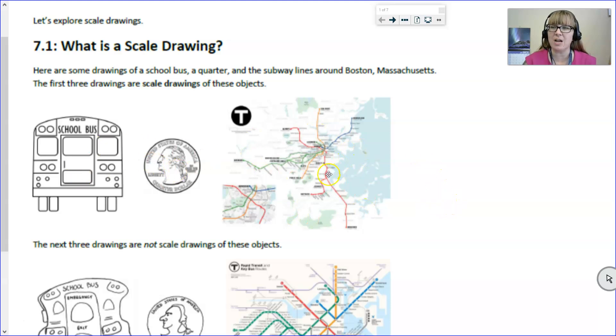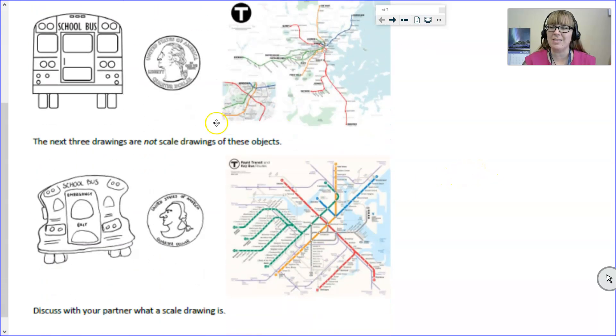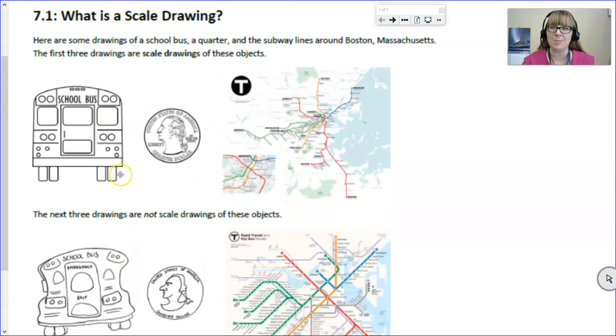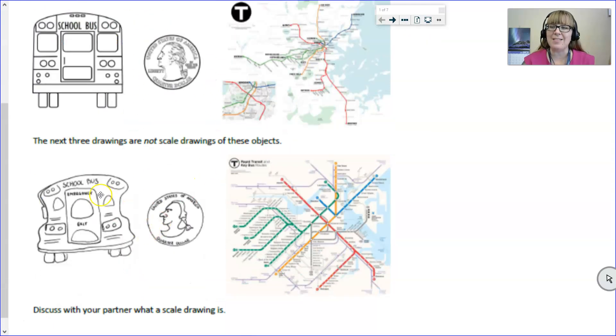These first three are scale drawings. When I look below that I can see these are drawings of a school bus, quarter, and a representation of the Boston Railway system, but we can see that these are not scale drawings. Based on that I want you to pause the video long enough to write down what do you think a scale drawing is.